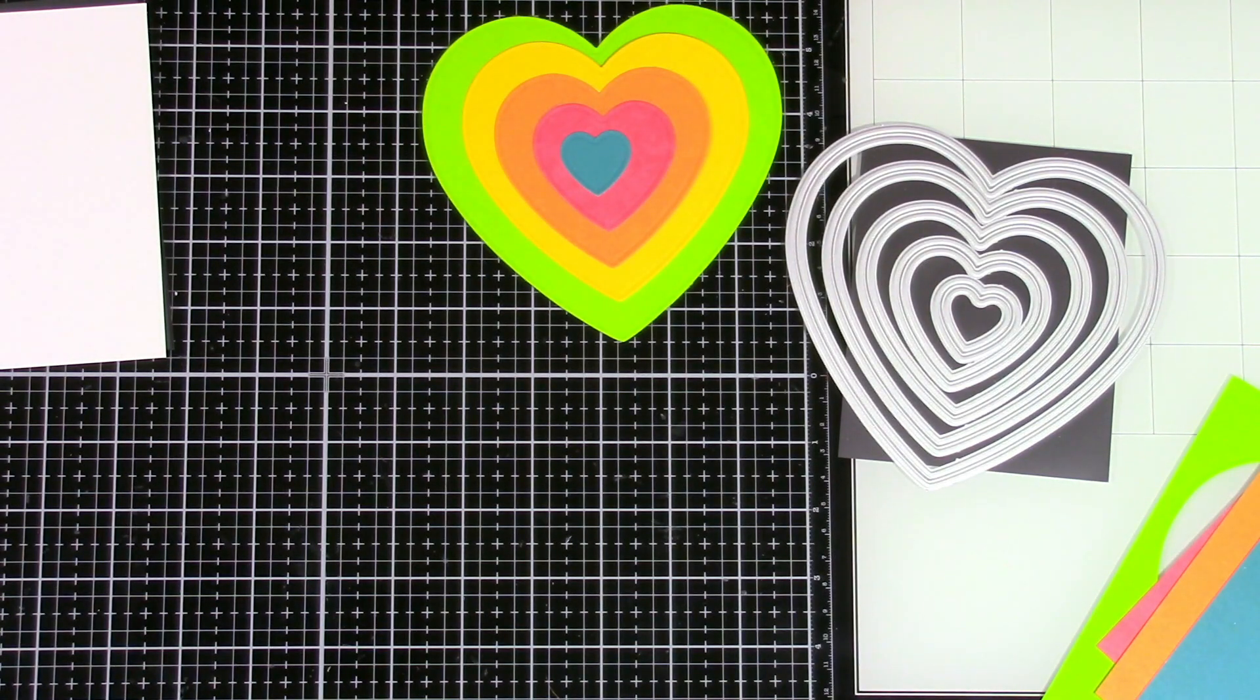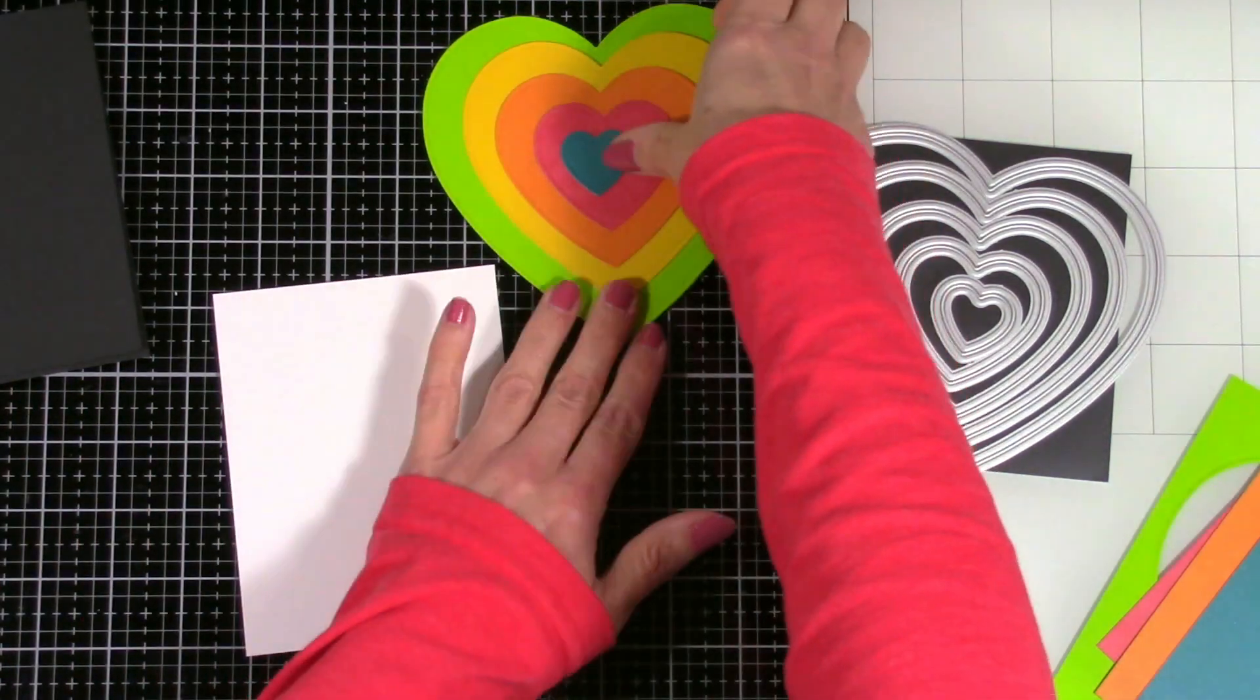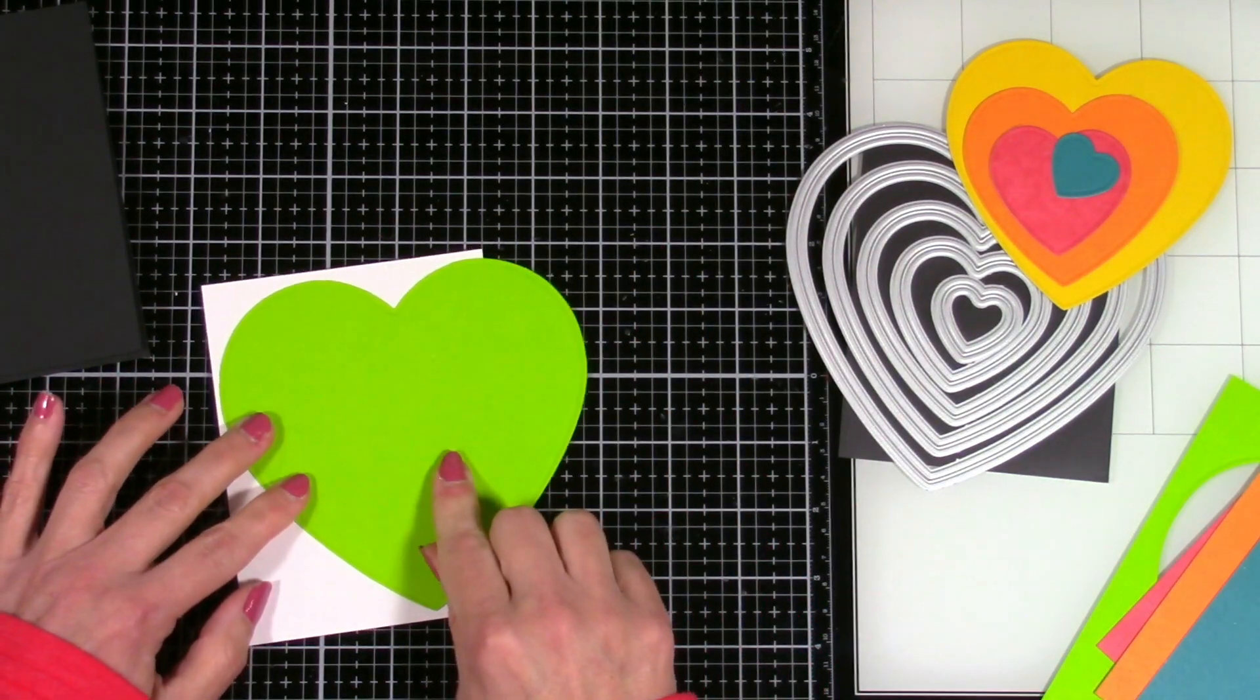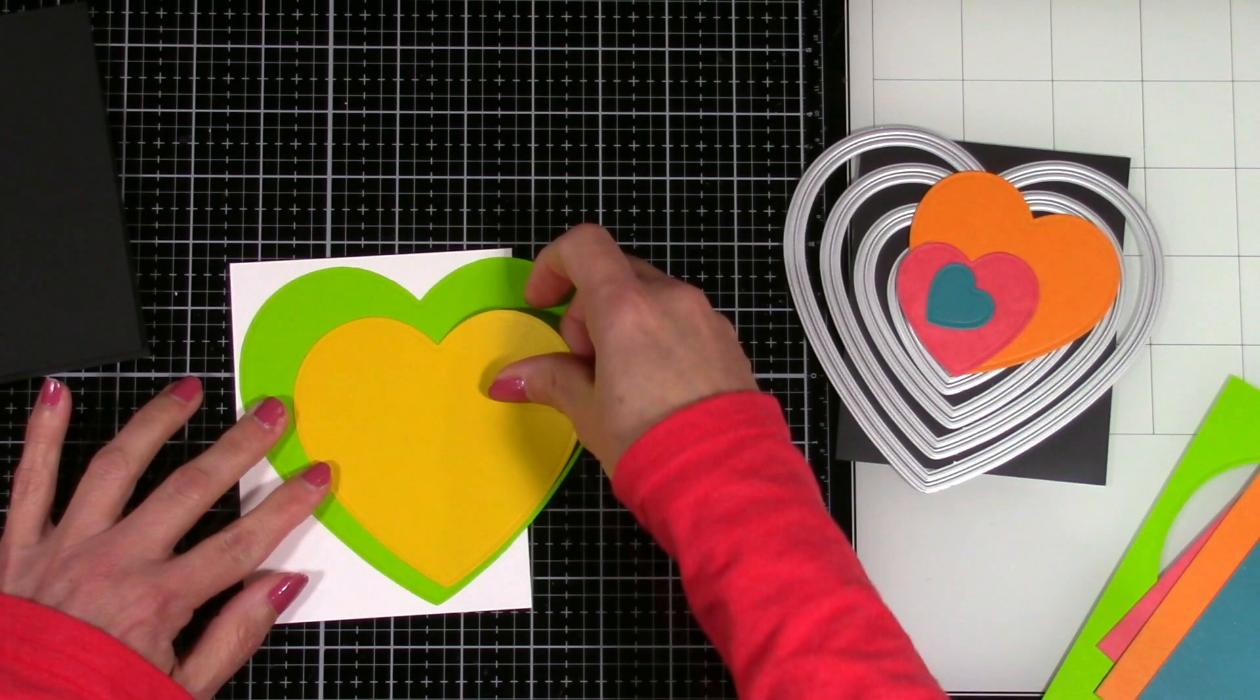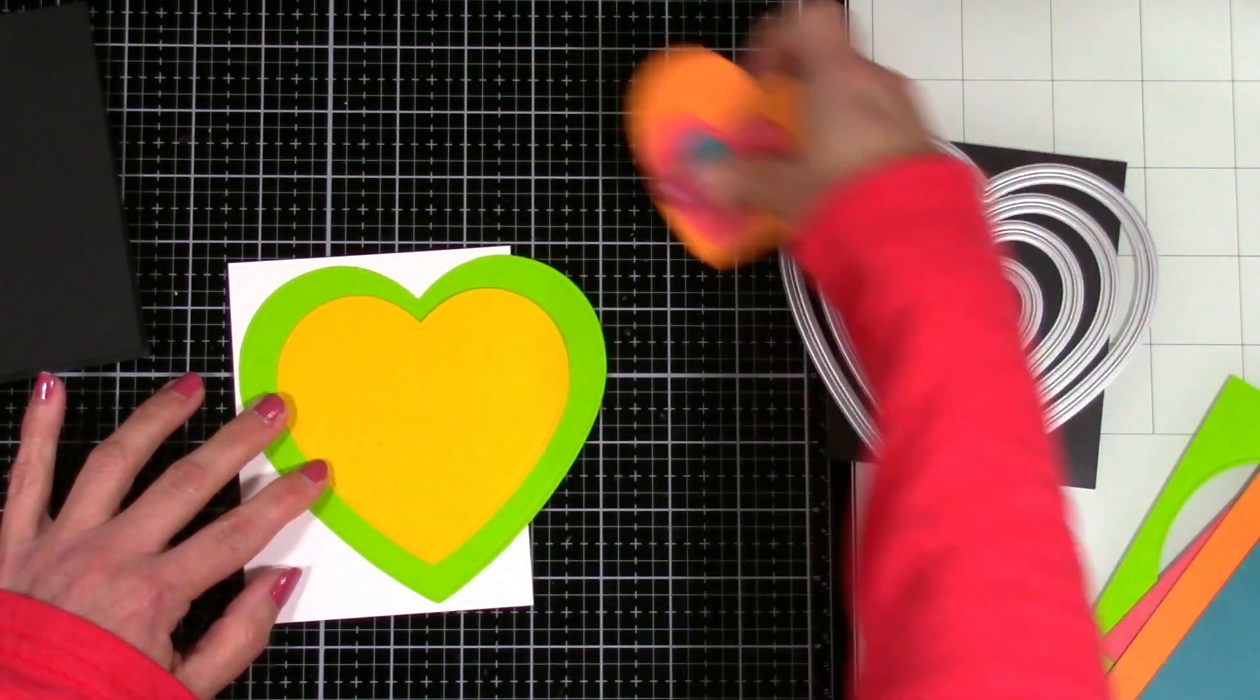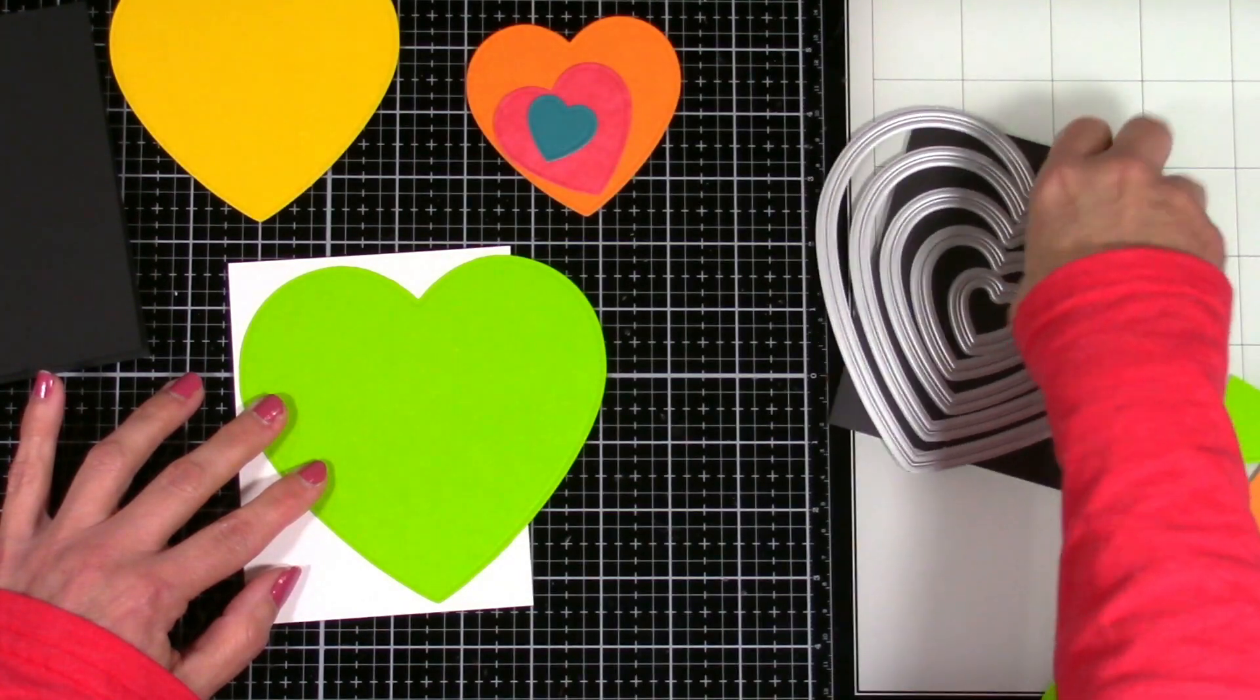And then once that's done, we are going to figure out where we're going to place this on the card base. So I kind of figured because the biggest heart die is way bigger than the standard card base, I knew it's going to hang off, which is perfect because then I can just trim it off the side and it's going to look absolutely fabulous.